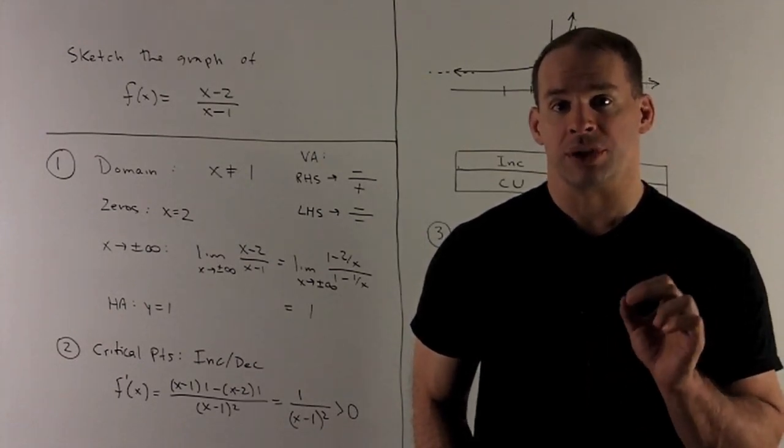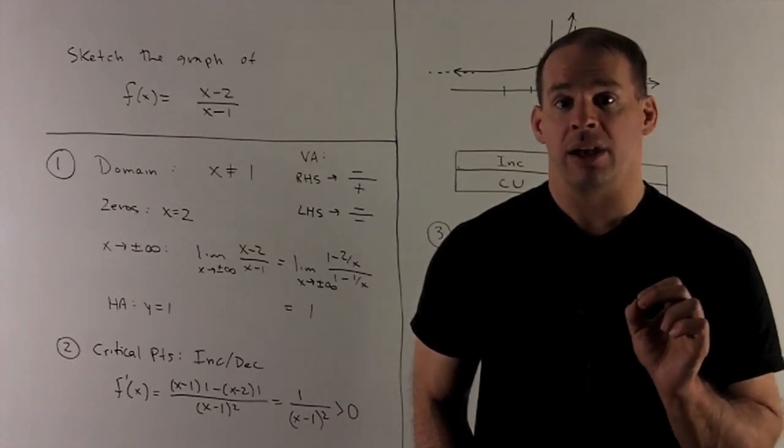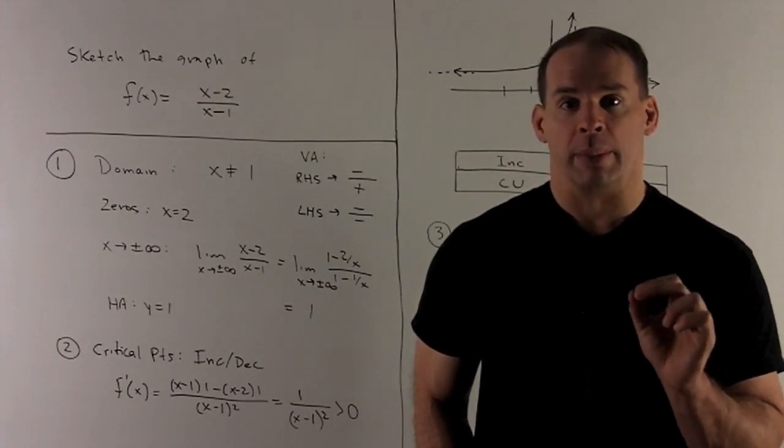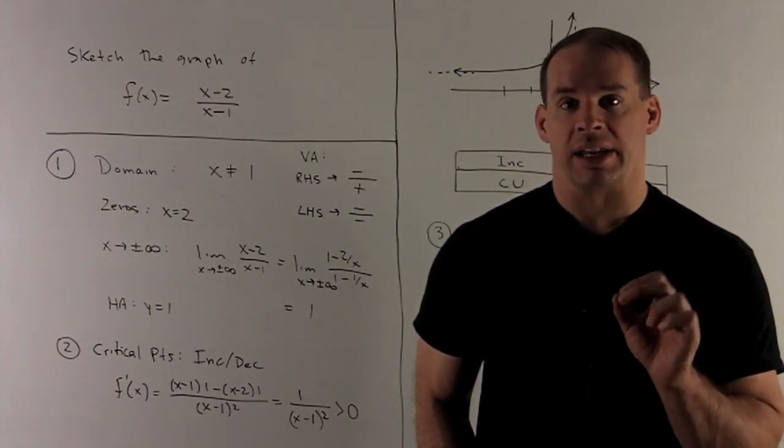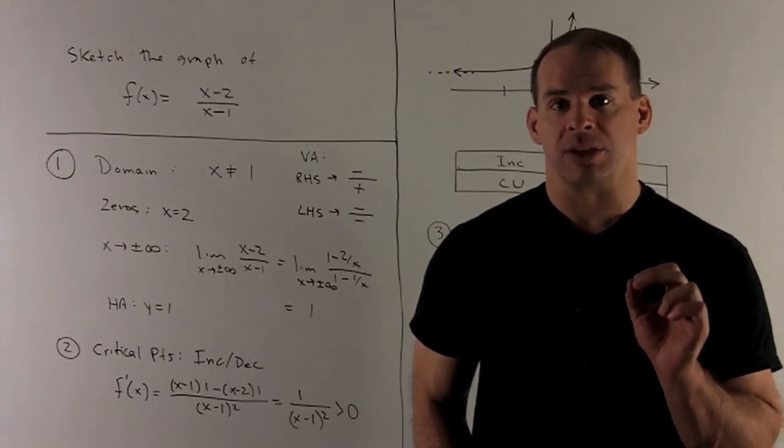First, we want to consider the domain. Since I have a rational function, our domain is just going to be the points where the denominator is non-zero. So our domain is x not equal to 1. Now, what's going to happen at x equal to 1?